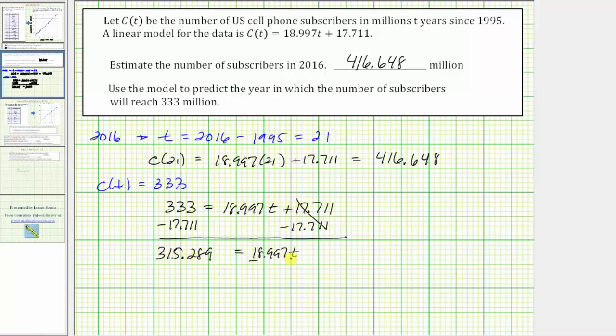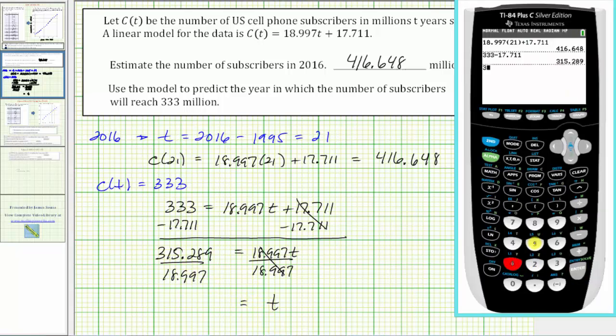Last step to solve for t would be to divide both sides by 18.997. Simplifying, on the right side this quotient is 1, 1 times t is t, and therefore t is equal to this quotient. 315.289 divided by 18.997 is equal to approximately 16.597.